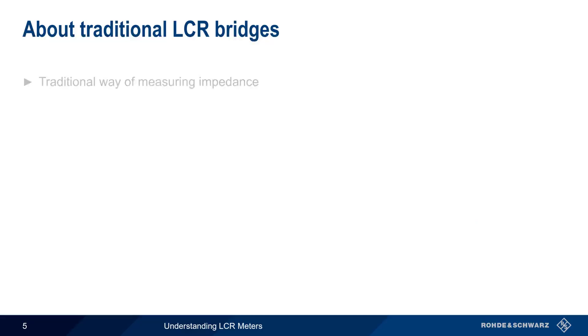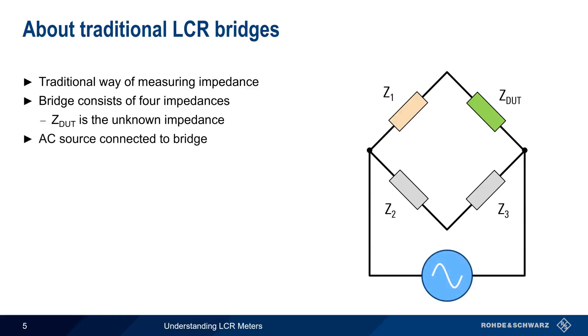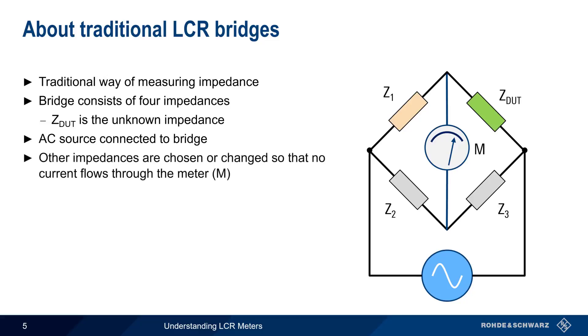The traditional method for measuring a complex impedance is using a so-called LCR bridge. An LCR bridge consists of four impedances, with Z-dot being the device under test or unknown impedance. An AC source is connected to the bridge, and the current is measured between these two points. The other impedances are chosen and changed until the current flowing through the meter is zero, at which point Z-dot can be calculated, again using another simple formula.